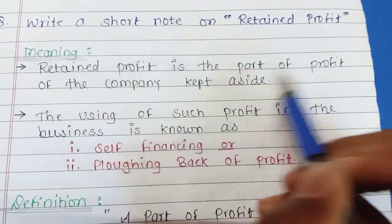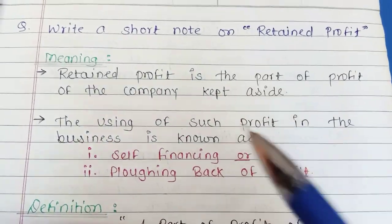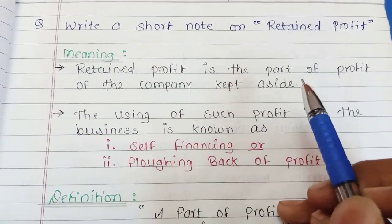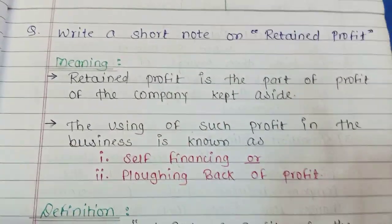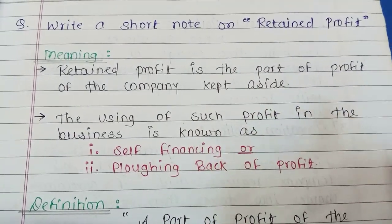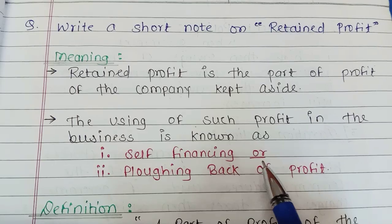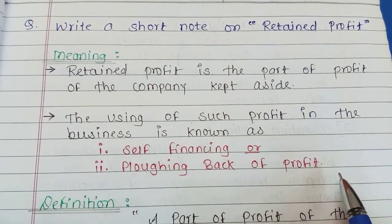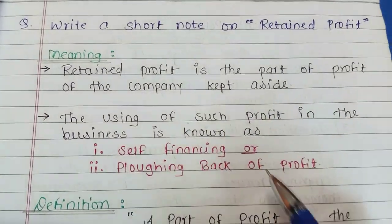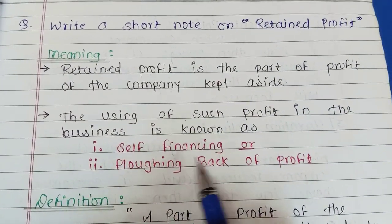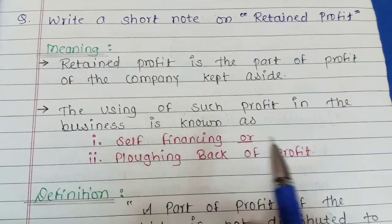Retained Profit is a part of the profit of the company kept aside — it's like a saving. Using such profit back in the business is known as Self-Financing or Ploughing Back of Profit. If the company uses that same retained profit within the company, it will be called Self-Financing or Ploughing Back of Profit.